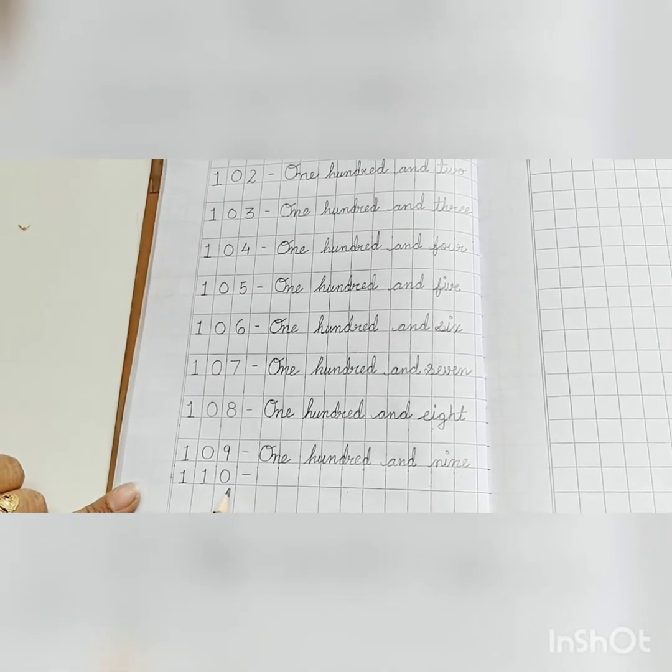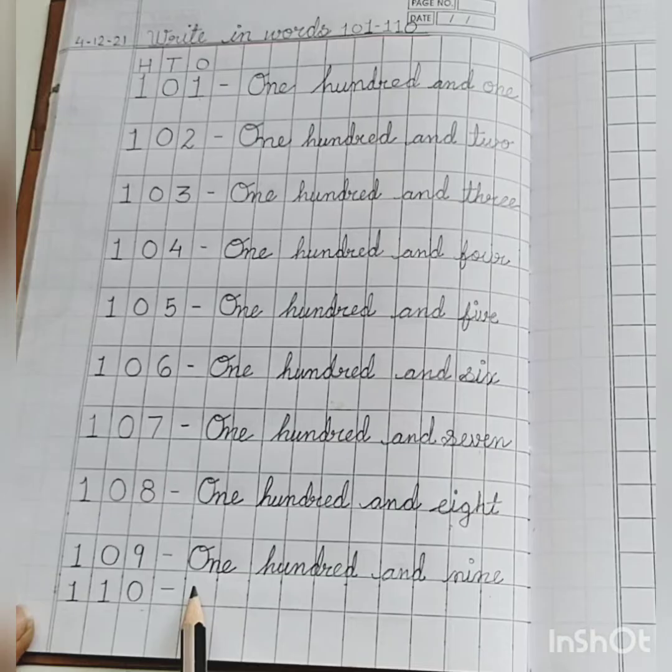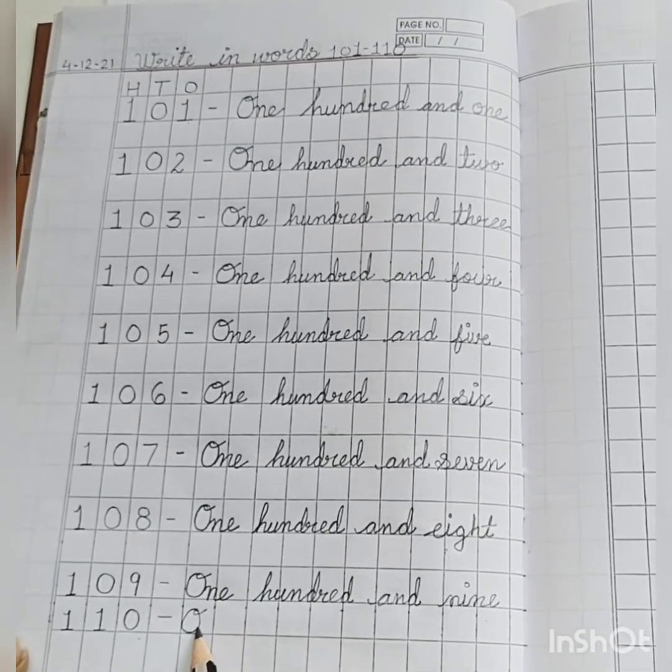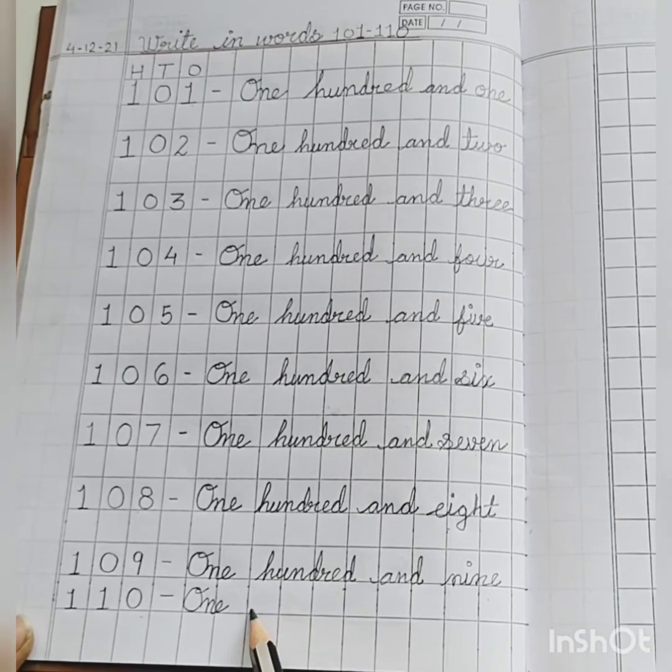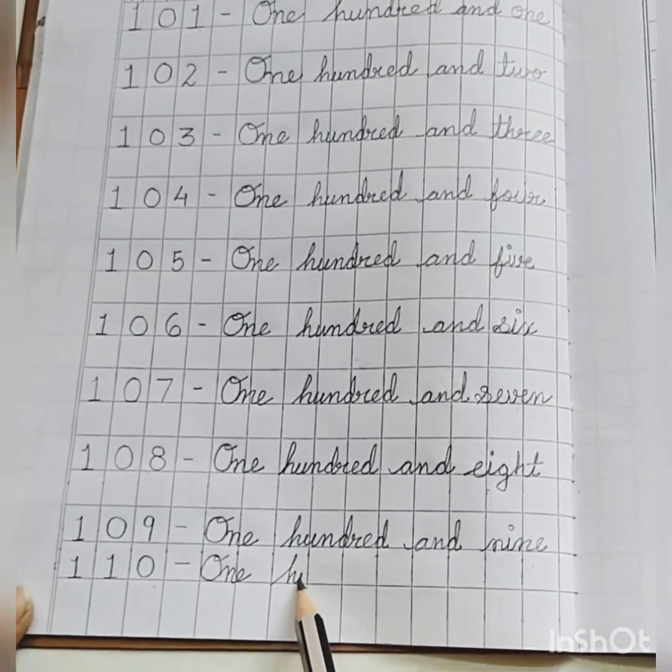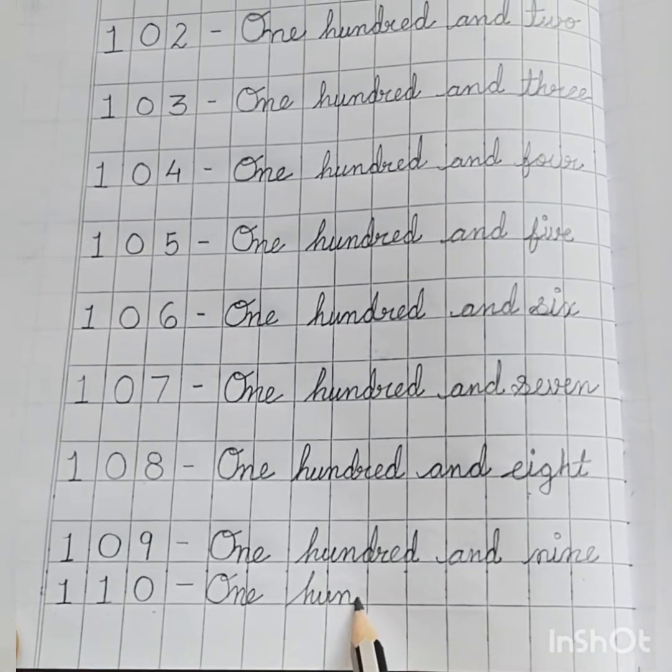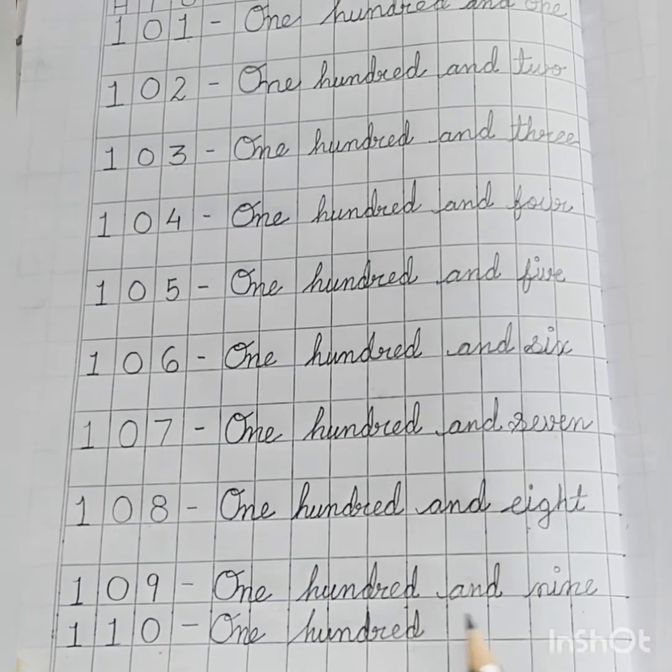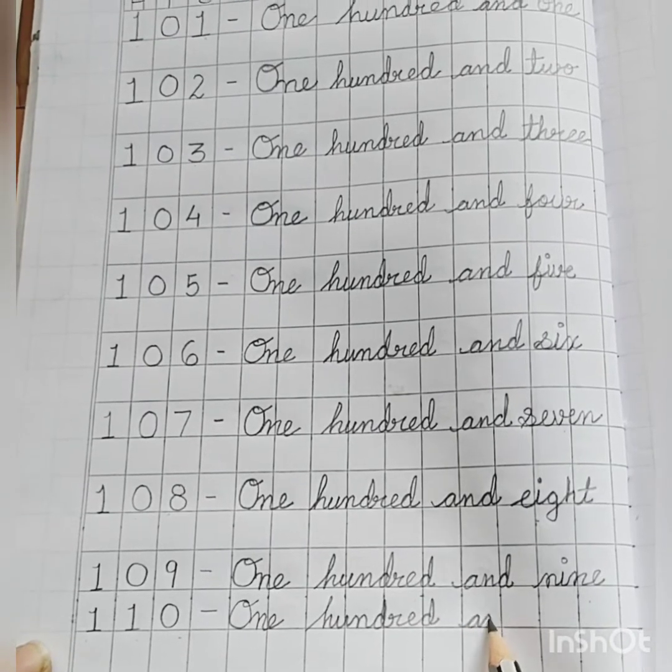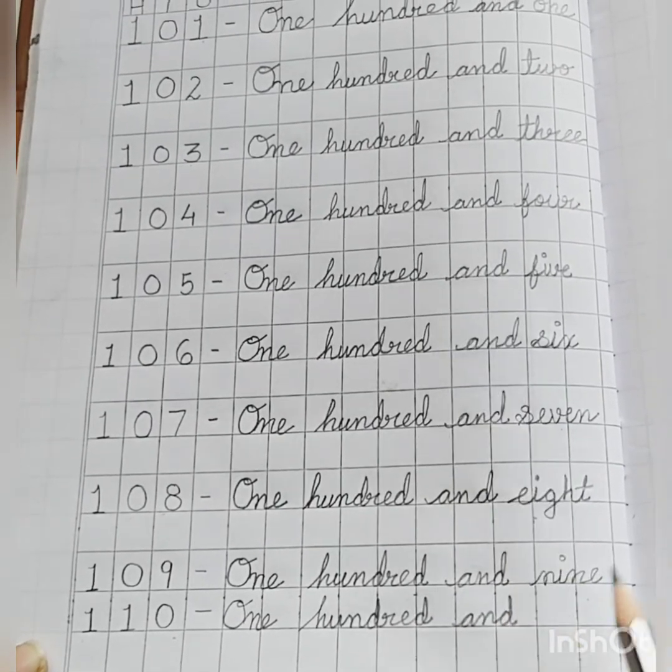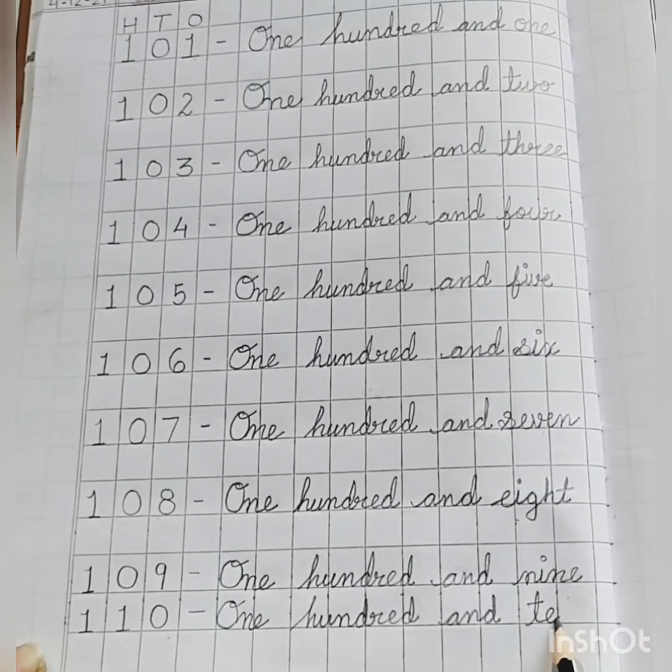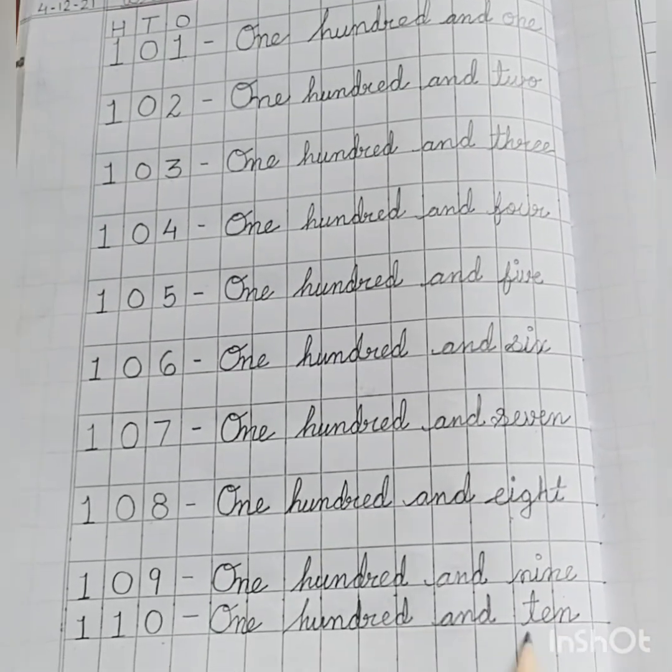Next, 110. O-N-E, 1, H-U-N-D-R-E-D, 100, A-N-D and T-E-N, 10, 110.